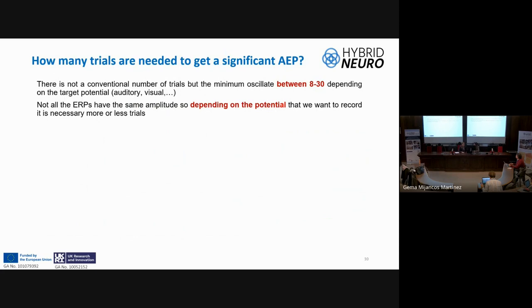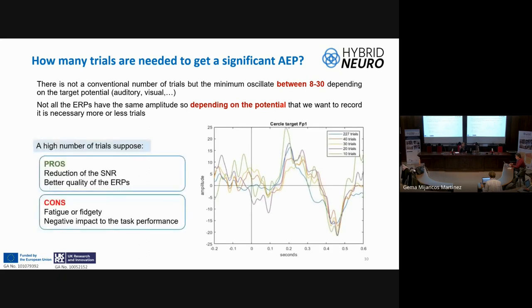One question is how many trials are necessary. There is no conventional number — it depends on the potential of interest. Not all stimuli generate the same trial shape and amplitude, but the minimum number oscillates between 8 and 30 trials. A large number of trials has pros, such as reduction of signal-to-noise ratio and better quality ERPs, but there are drawbacks: fatigue when subjects perform cognitive tasks and negative impact on task performance. An example is shown with 10, 20, 30, 40, and over 200 trials.